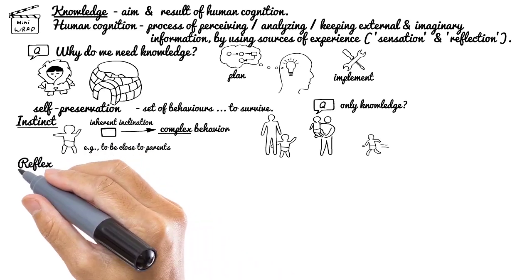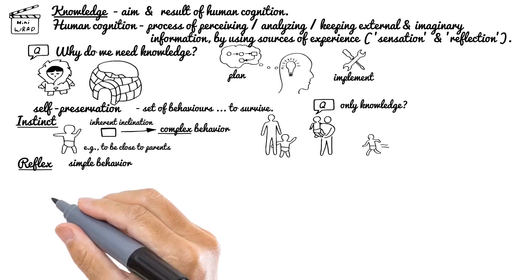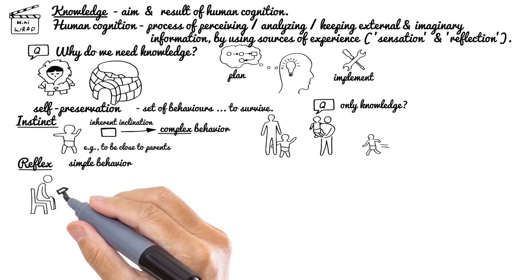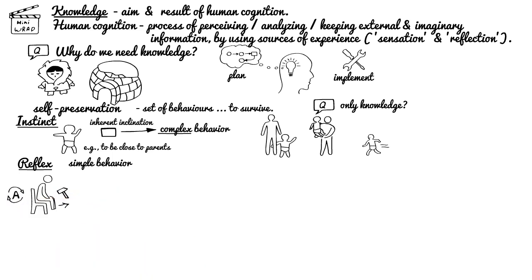Another term is reflex, which describes simple behavior, not so complex as instinct. In general, reflex is the body's automatic action in response to a stimulus or environment conditions. For example, if you touch something very hot by hand, your body's immediate reflex reaction will be to pull back your hand to avoid potential hand damage due to excessive heat.